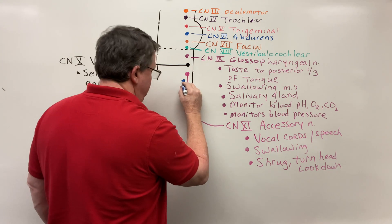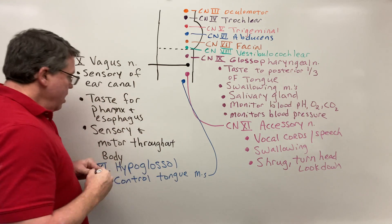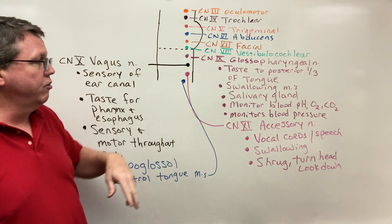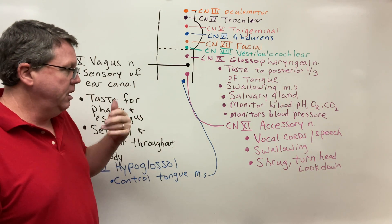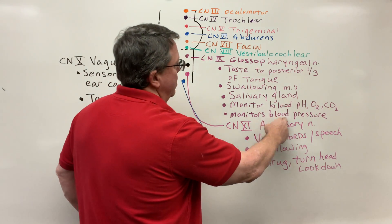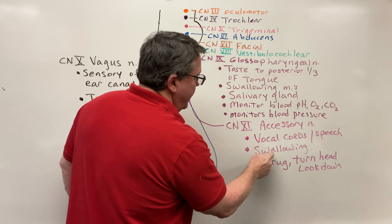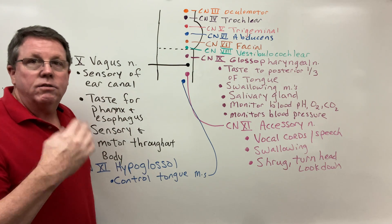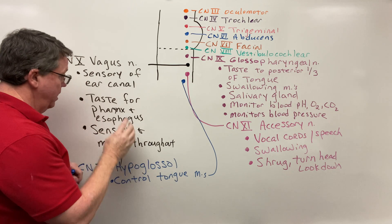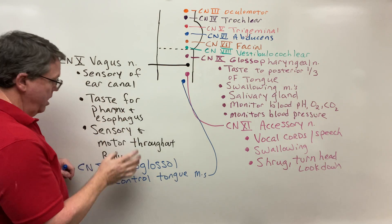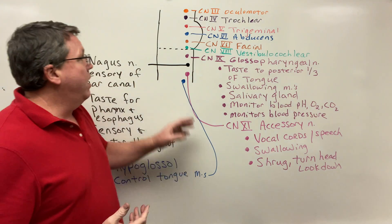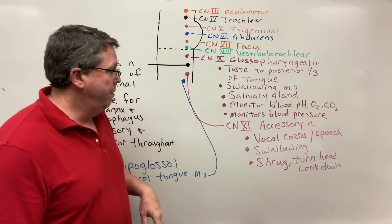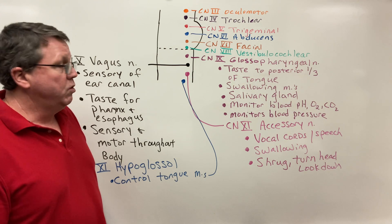To summarize, the medulla oblongata controls blood pressure, works with the pons to control respiration rate, plays a role in digestion, and controls heart rate. The glossopharyngeal and vagus nerves are involved in swallowing and salivary glands — in fact, when a doctor asks you to say 'ah,' they're testing these two nerves. The vagus nerve also goes to the heart to control heart rate. These are the main functions of the medulla oblongata, though this video isn't meant to be completely comprehensive.